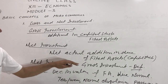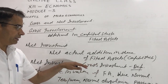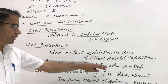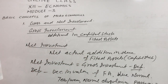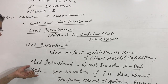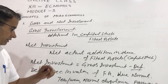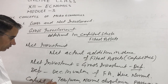When depreciation is adjusted from the gross investment, the net balance is called net investment. When depreciation is included in the value of investment, that is called gross investment. Depreciation means a decrease in the value of fixed assets due to any reason. A related term sometimes used is capital loss.